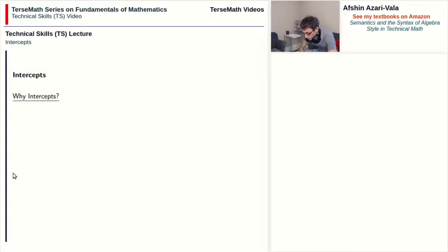Now on the question of why intercepts? Well the reason that we draw graphs is that we can get so much information from them at a glance, and among the important information that you can get from a graph are the intercepts. Usually in applications, intercepts point to some event of significance, and we're going to see that in the examples that will follow.